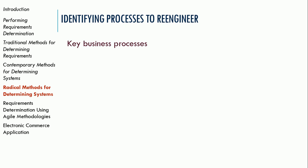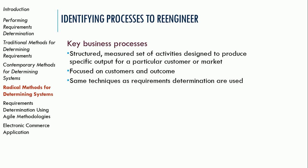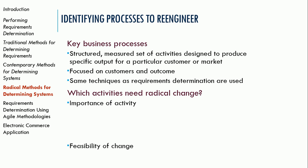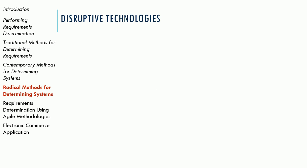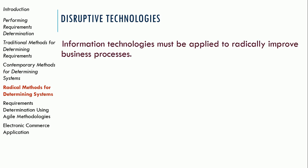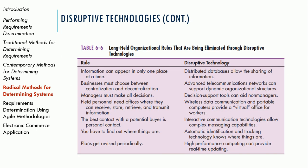Identifying processes to re-engineer involves looking at key business processes — structured, measured sets of activities designed to produce specific output for a particular customer market, focused on customers or outcomes. The same techniques used in requirements determination are used here. Activities that could need radical change are evaluated on importance, feasibility of making the change, and the level of dysfunction of the current activity. Your textbook also discusses disruptive technologies, which are new technologies that can radically improve some process and enable business process re-engineering. You look at what these disruptive technologies are and see how you can apply them to the problem you're trying to solve.